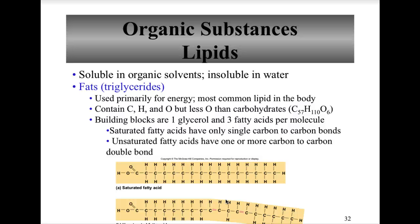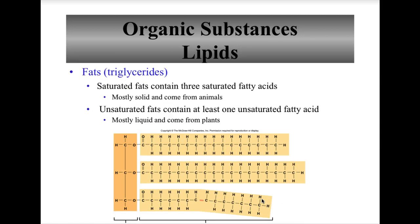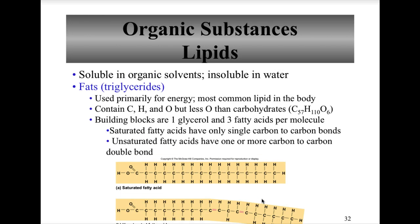Trans fats are unsaturated fats that have been solidified by artificial means. They are not produced or maintained naturally in the body and include things like margarine. Trans fats are the worst type of fats.